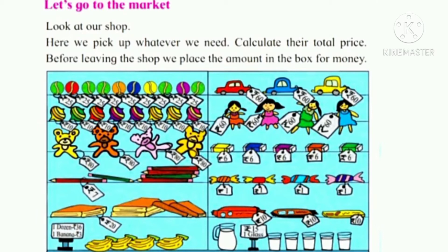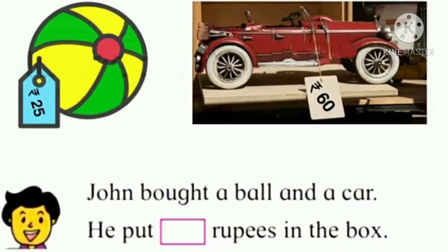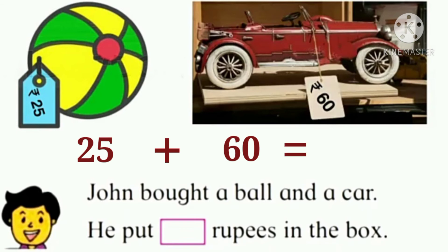Let's see some examples of how we have to calculate the total price. John bought a ball and a car. The ball is for rupees 25 and the car is for rupees 60. We will add rupees 25 and 60, and we get rupees 85. John will put 85 rupees in the box.